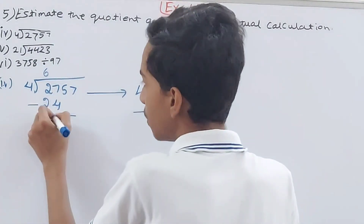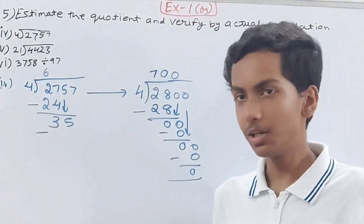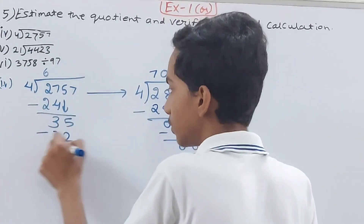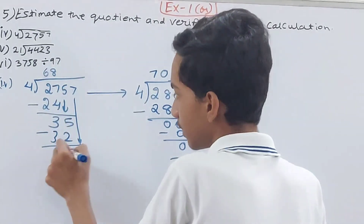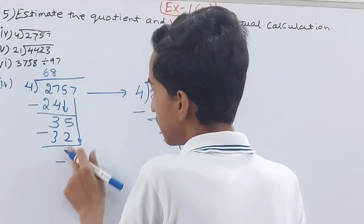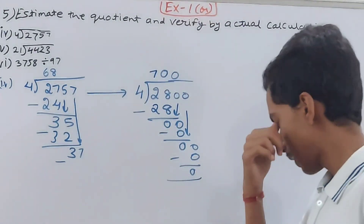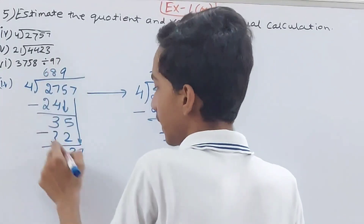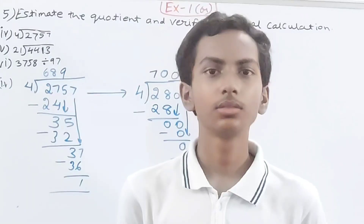For the actual 2757 ÷ 4: 4 into 27 — 6 times 4 is 24, minus 24, remainder 3. Bring down 5, giving 35. 4 into 35 — 8 times 4 is 32, minus 32, remainder 3. Bring down 7, giving 37. 4 into 37 — 9 times, 9 fours are 36, minus 36, remainder 1. Actual quotient is 689 remainder 1.